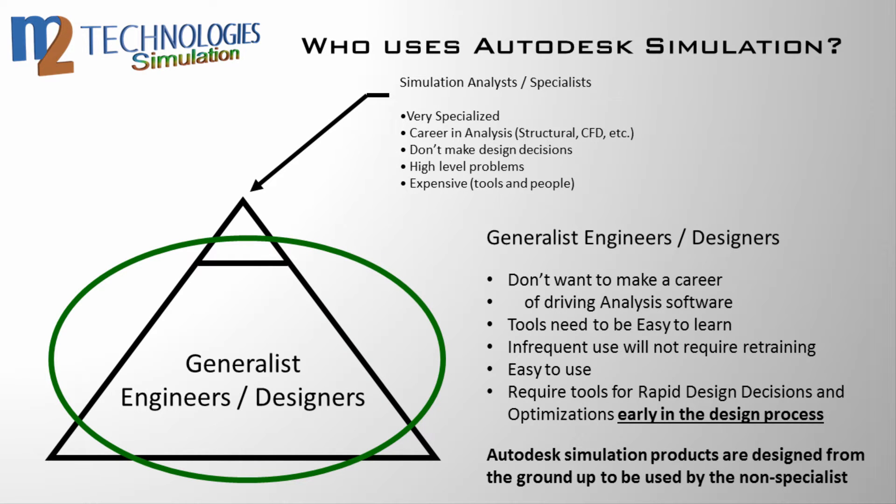What makes Autodesk Simulation different? Who uses it? Autodesk Simulation is built from the ground up to be fast and easy to use. The triangle graphic on screen represents the entire community of engineers and designers. Traditionally, highly educated and highly specialized individuals — represented by the top portion of the triangle — have been relied upon to perform FEA analysis. These individuals are typically career analysts: expensive people who use expensive tools. This type of analysis is often done at the end of a design cycle for validation purposes.